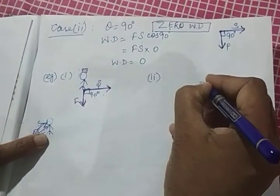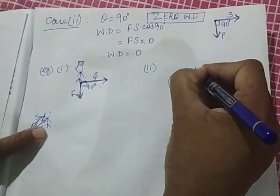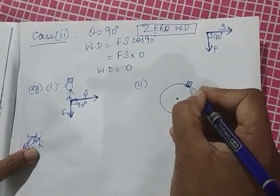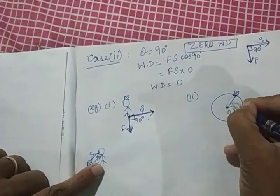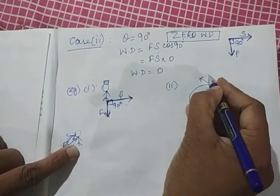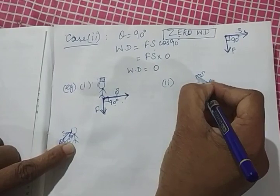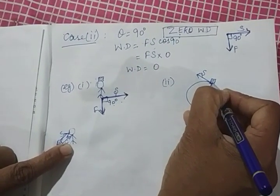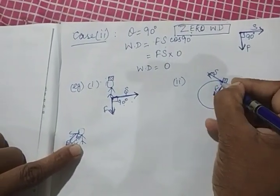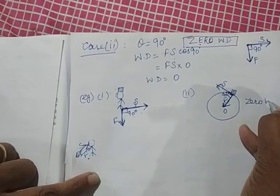Another example: consider a body moving in a circular path. At any point, there is centripetal force acting toward the center, and the displacement at any point is along the tangent. Since the radius and the tangent are at 90 degrees to each other, the angle between centripetal force and displacement is also 90 degrees. So in this case also, work done is zero.